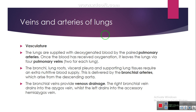The lungs are supplied with deoxygenated blood by the paired pulmonary arteries. Once the blood has received oxygenation, it leaves the lungs via four pulmonary veins, two for each lung. The bronchi, lung root, visceral pleura, and supporting lung tissues require an extra nutritional blood supply, which is delivered by the bronchial arteries arising from the descending aorta. The bronchial veins provide venous drainage — the right bronchial vein drains into the azygous vein, whilst the left drains into the accessory hemiazygous vein.